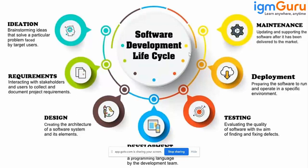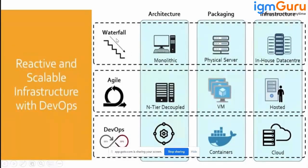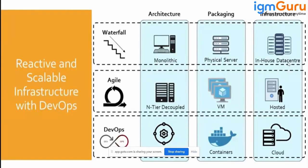This process started long back, and what has changed is that earlier we were following the waterfall model. In waterfall we worked with monolithic architecture — one single big piece of software — packaged everything and put it on physical servers in in-house data centers. But this had problems: it was very time-consuming, if you had a bug you had to stop everything, and complex requirements caused a lot of problems. So the waterfall model was not meeting expectations.